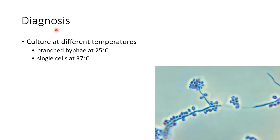Now let us see about the diagnosis of Sporothrix schenckii. It is a dimorphic fungi and it can be diagnosed by culturing it at different temperatures. It forms branched hyphae at 25 degrees Celsius, as you can see in this picture, and there will be single cells at 37 degrees Celsius.